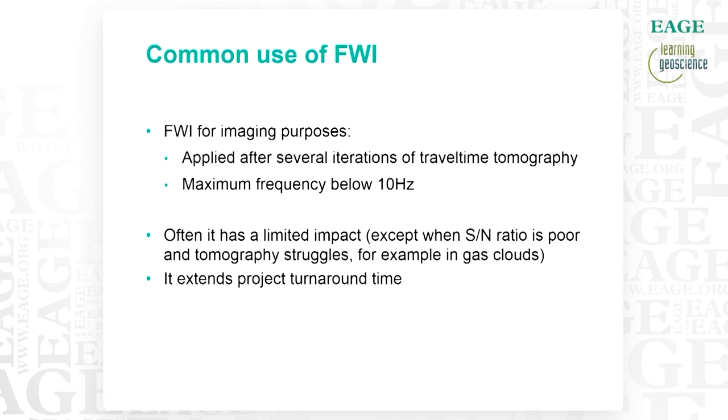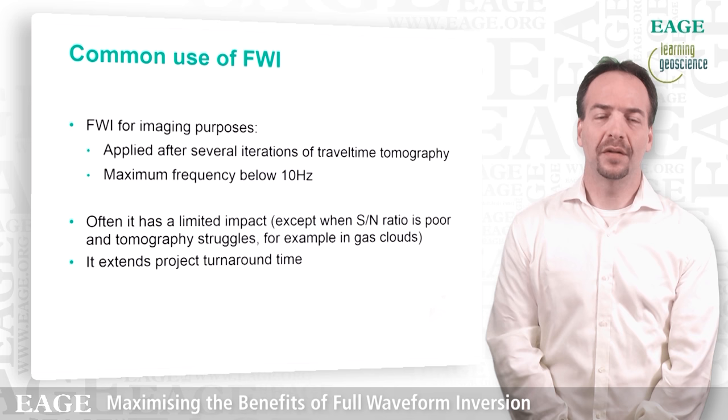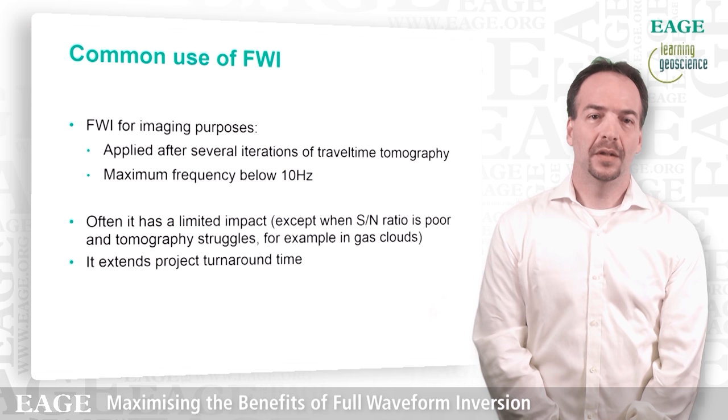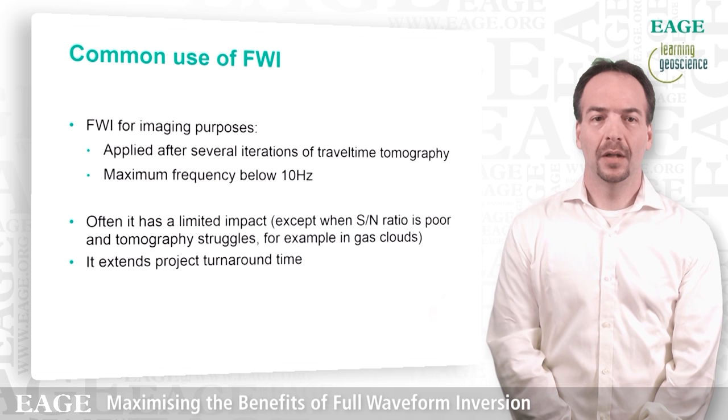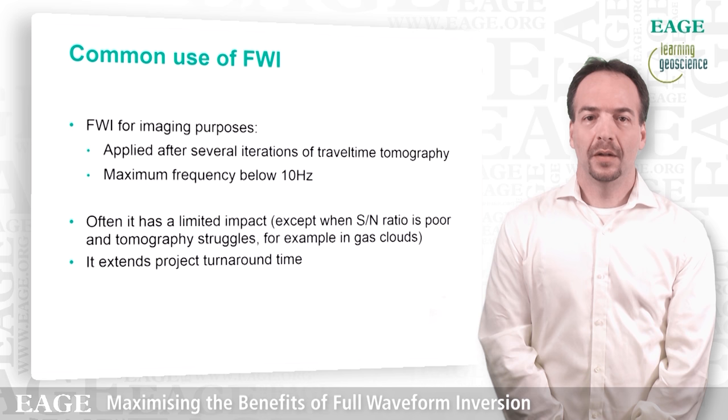The common use today of FWI is mostly for imaging purposes and is applied after several iterations of travel time tomography. The reason for that is because we want to start from the most accurate possible velocity model to avoid being stuck in a local minima — what we call cycle skipping. The maximum frequency is never above 10 Hz, because for imaging that is plenty. In our opinion, it often has only a limited impact on the image, because travel time tomography usually does an excellent job recovering the long wavelength of the velocity.